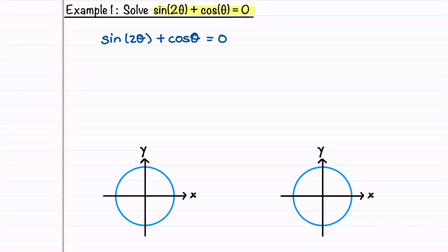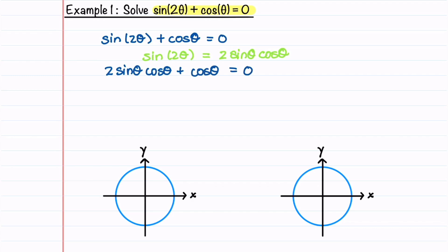I've placed a link in the video description below to a comprehensive list of these identities that you can download and use as a reference. We'll use the identity sine of 2θ is equal to 2 sine θ cosine θ. We'll then plug this into our equation, which gives 2 sine θ cosine θ plus cosine θ is equal to 0.